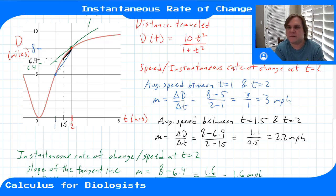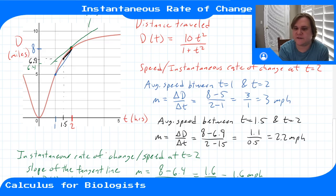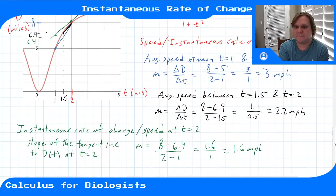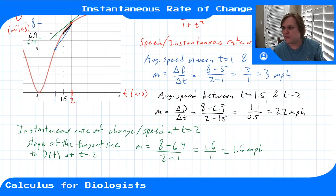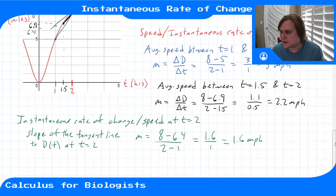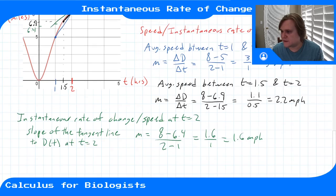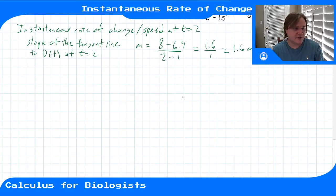If I pick off a point — it's about 6.4 — and I know (2, 8) is a point on the curve, I can say (8 − 6.4) / (2 − 1) = 1.6 over 1, or 1.6 miles per hour. So that would be my speed at time two, or the instantaneous rate of change of my function d(t) at t = 2. We need to be more mathematical about this — this is an arbitrary process of drawing pictures.